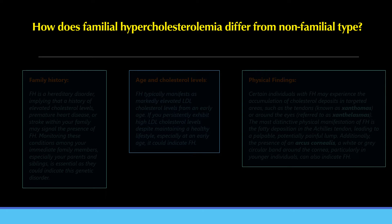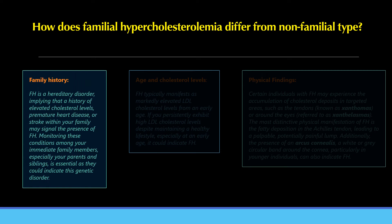How does familial hypercholesterolemia differ from the non-familial type? If you have high cholesterol and are wondering if you might have FH, consider the following factors. Family history: FH is a hereditary disorder, meaning a history of elevated cholesterol levels, premature heart disease, or stroke within your family may signal FH. Monitoring these conditions among immediate family members, especially parents and siblings, is essential.